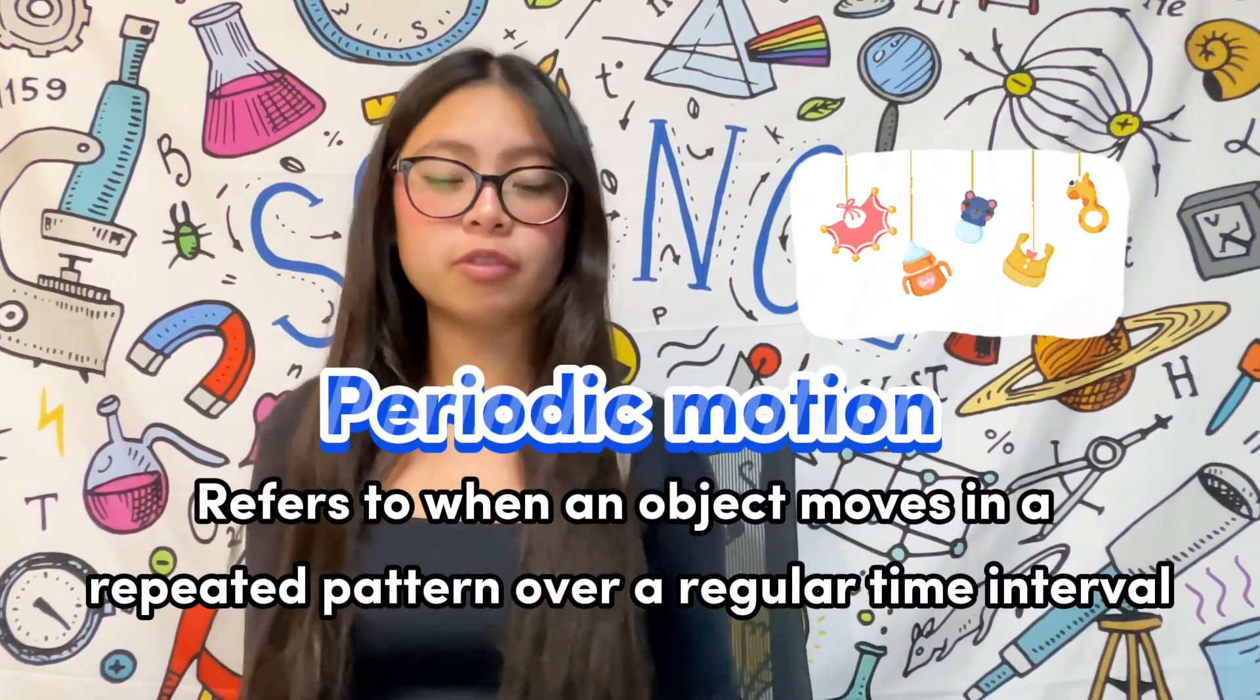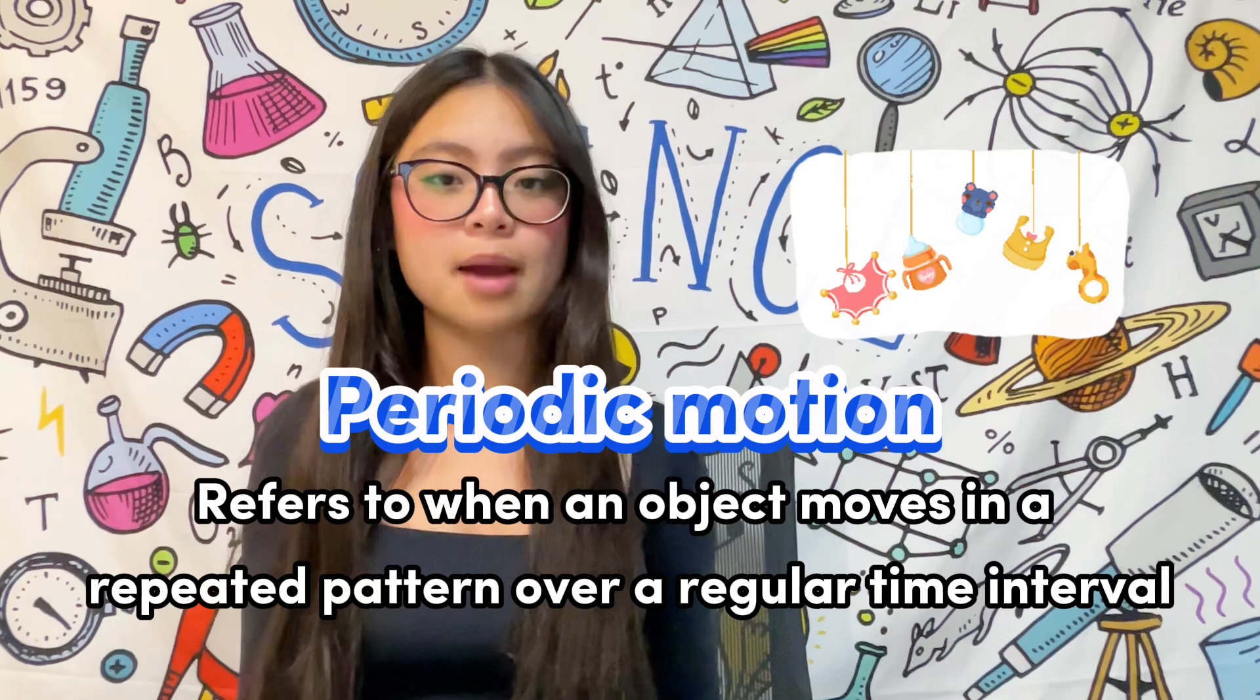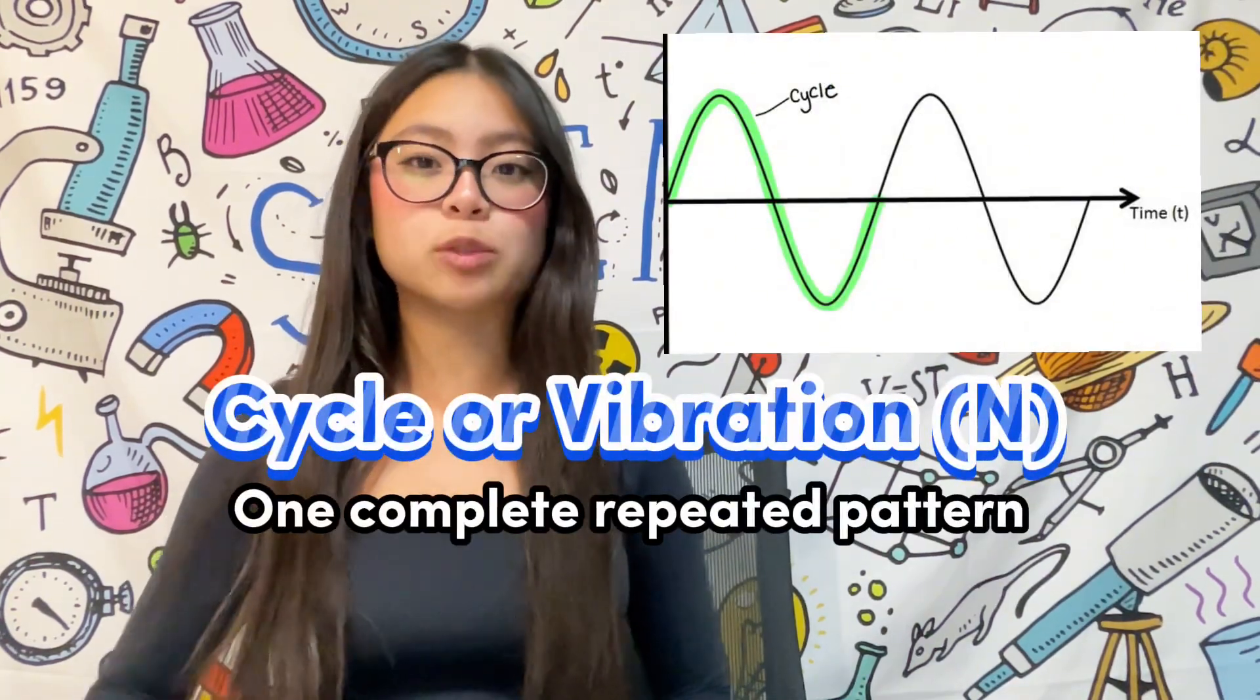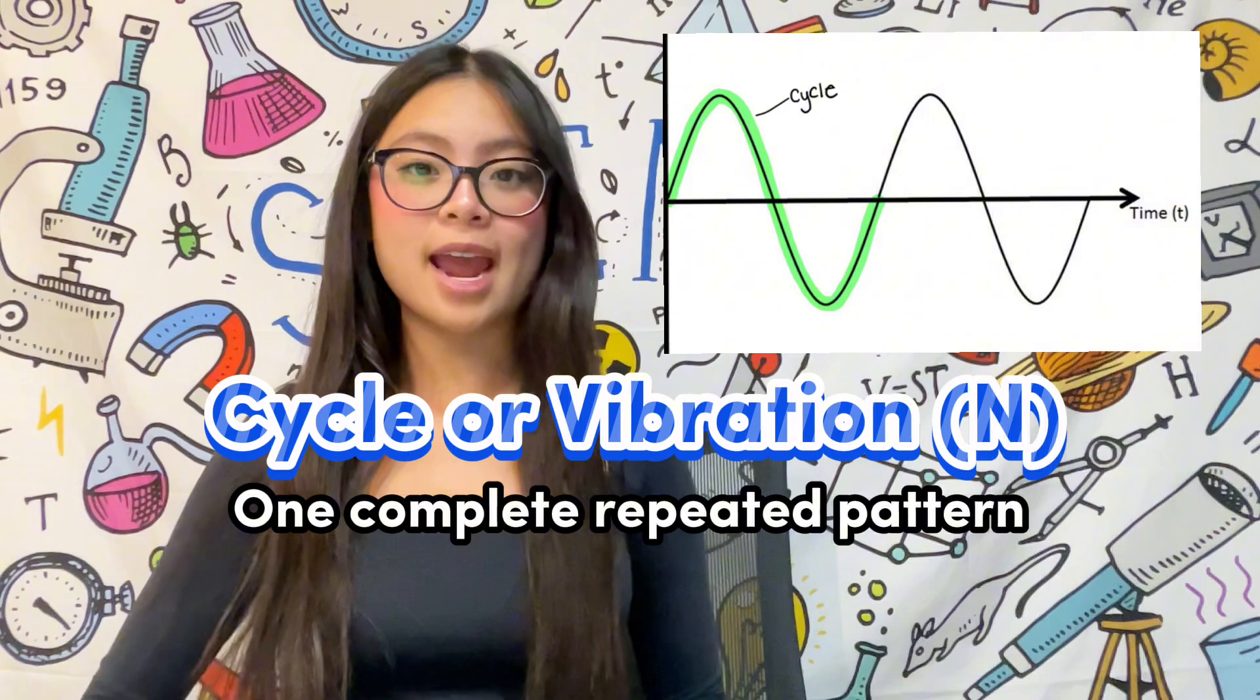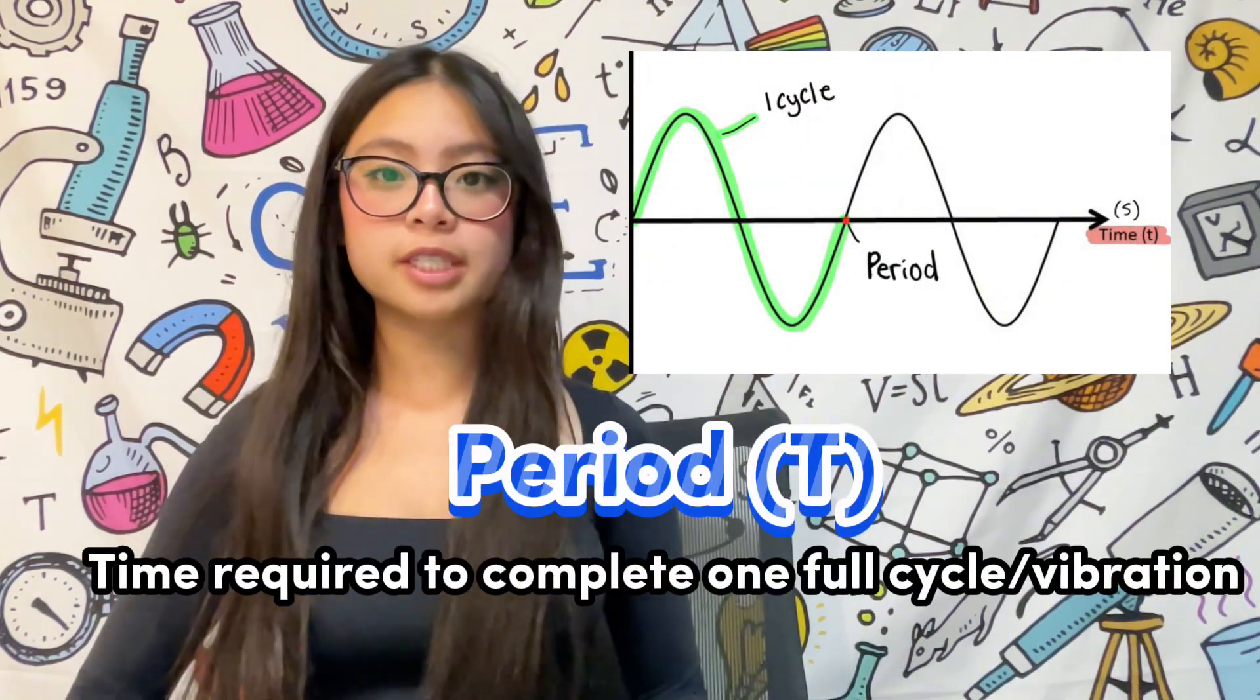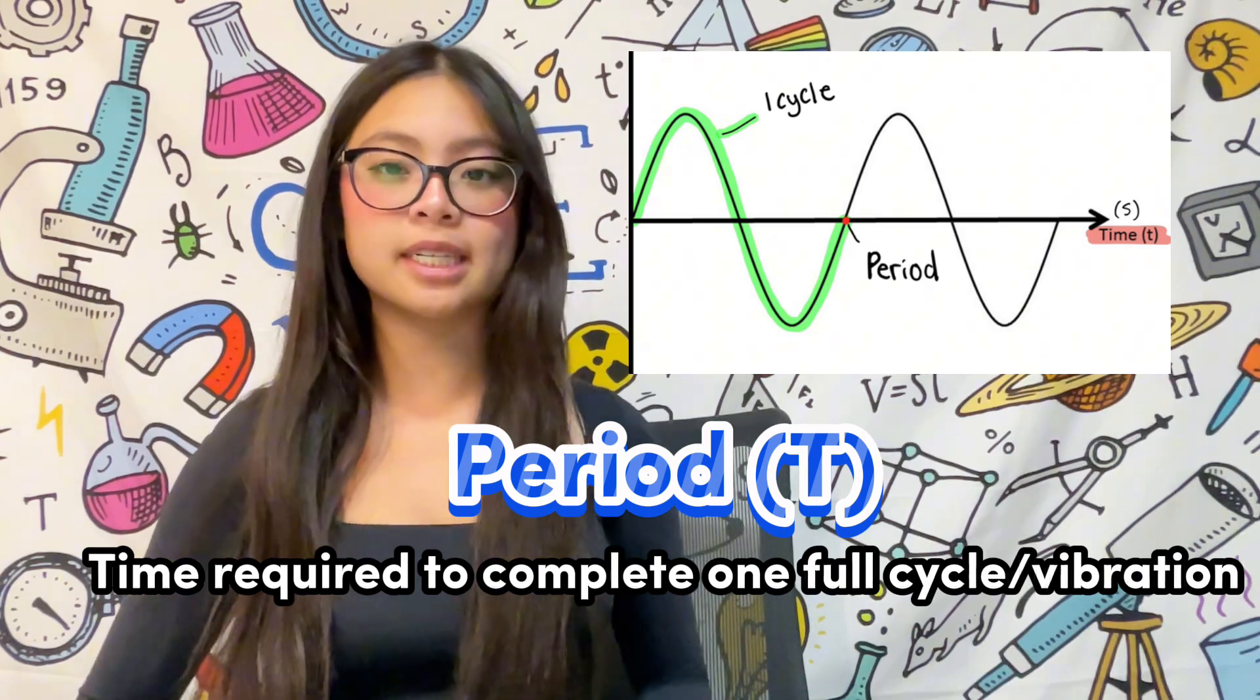To begin, let's discuss some common characteristics and terminology used to describe vibrations such as waves. Periodic motion refers to when an object moves in a repeated pattern over a regular time interval. One cycle or one vibration is one complete repeated pattern and it is represented by the letter N. Period refers to the time taken to complete one full cycle and it is represented by the letter T.